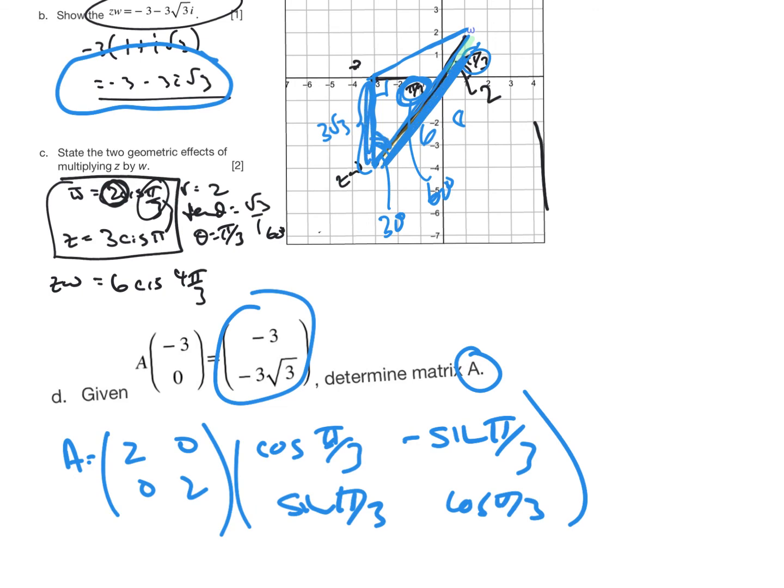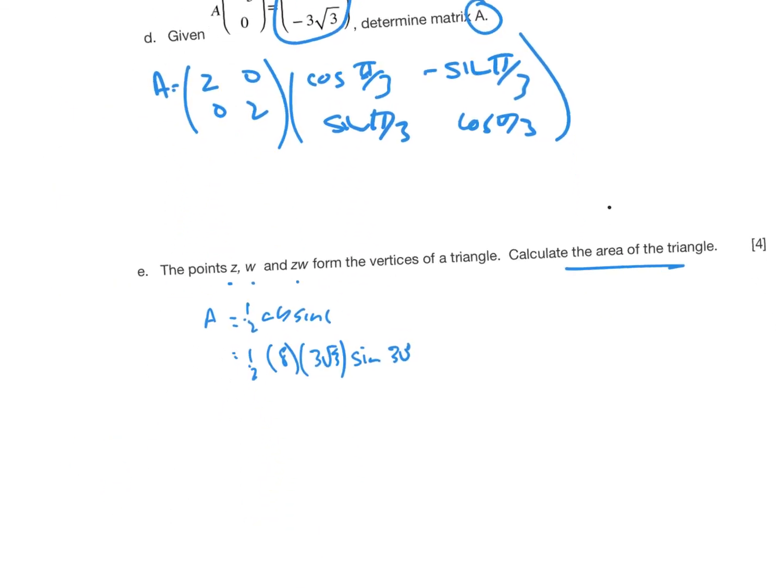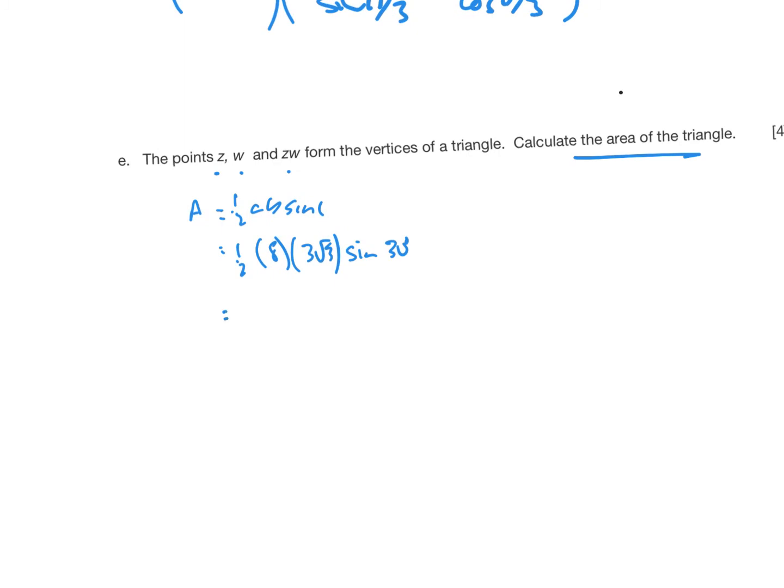The side and the angle included is how that formula works. And so when I multiply that out, that becomes 4 times 3 root 3 times the sine of 30, which is 1 half. And so then if that cancels here, I end up with 6 root 3 units squared.